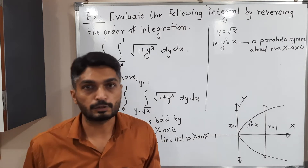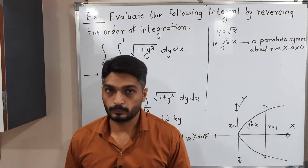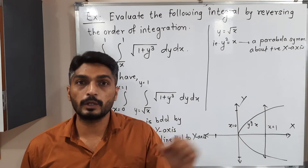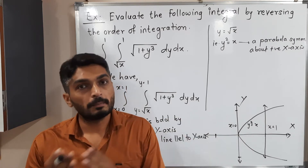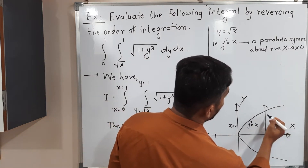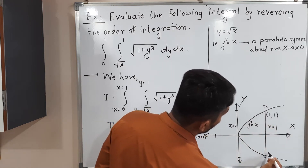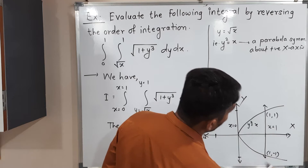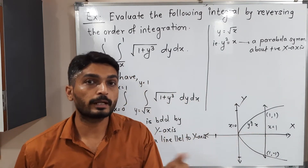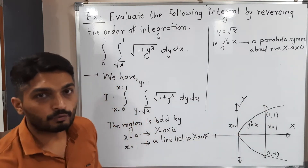We are interested in finding the points of intersection of the parabola y² = x with the line x = 1. Substituting x = 1 into y² = x gives y² = 1, so y = ±1. Therefore the two points of intersection are (1, 1) and (1, −1).